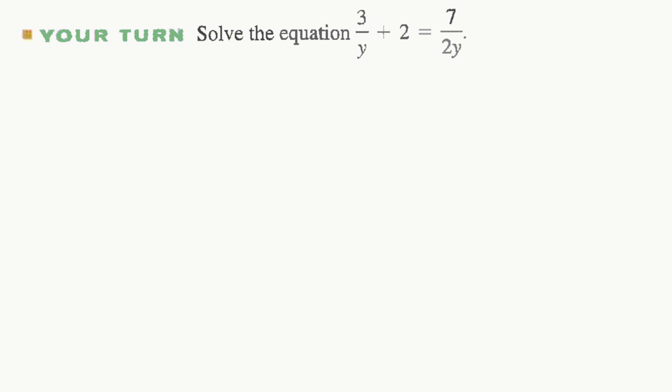Your turn. Okay, the LCD here is 2y, and we'll multiply everything by 2y. Over here they cancel, over here the y's cancel, so we have 2 times 3 plus 2 times 2y equals 7. So 6 plus 4y equals 7. Subtract 6 is 4y equals 1, y equals 1 quarter.